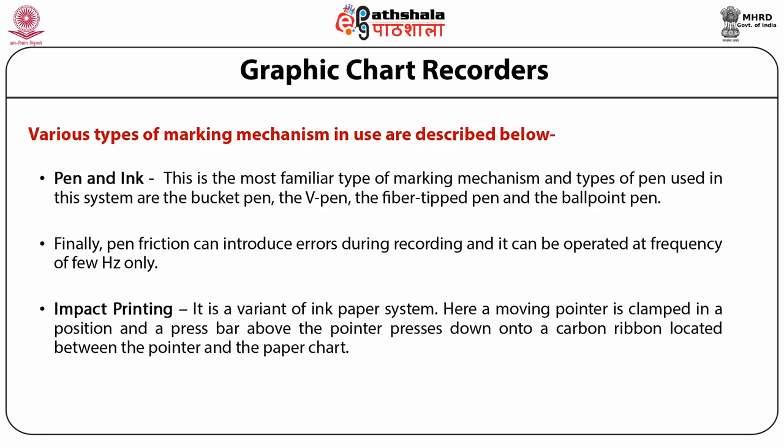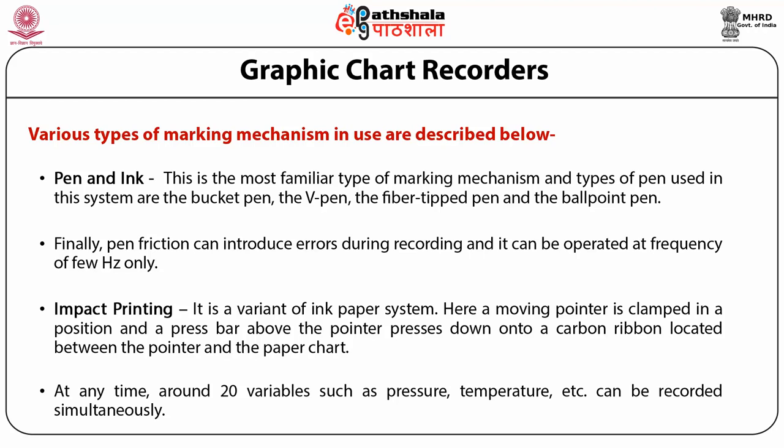B. Impact printing: This is a variant of the ink-paper system. A moving pointer is clamped in position and a press bar above the pointer presses down onto a carbon ribbon located between the pointer and the paper chart. Carbon markings imprinted on the chart serve as a record. Large format recorders with 0.28-meter wide strip charts use impact printing to record data. Around quantity variables such as pressure, temperature, etc. can be recorded simultaneously.